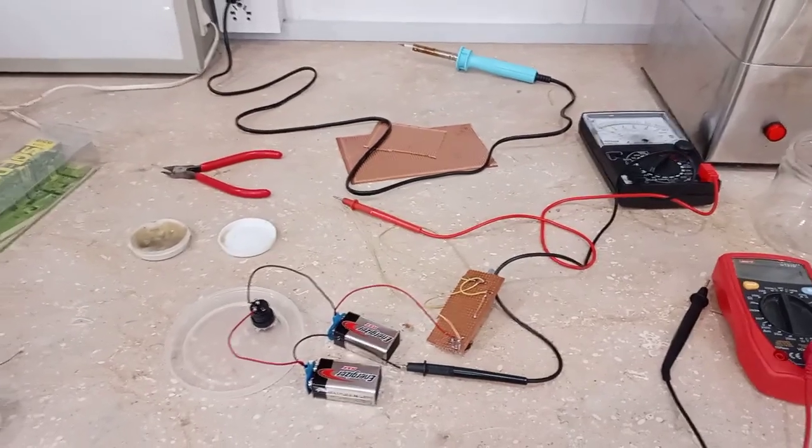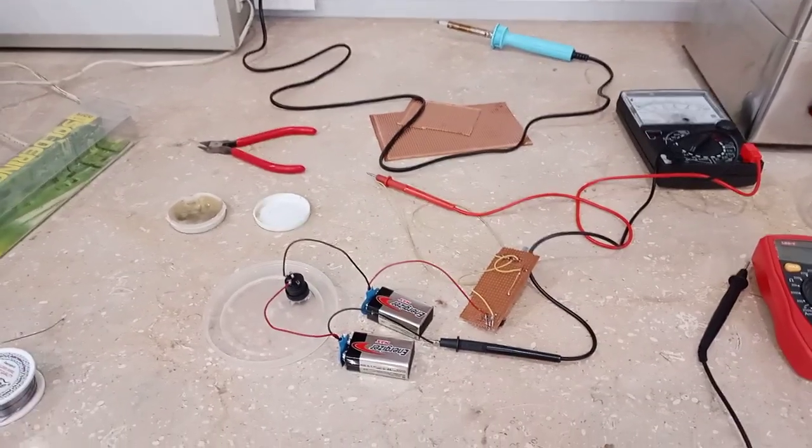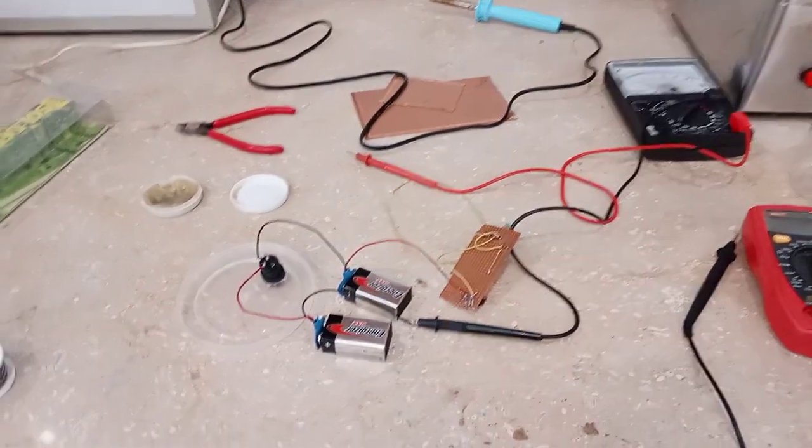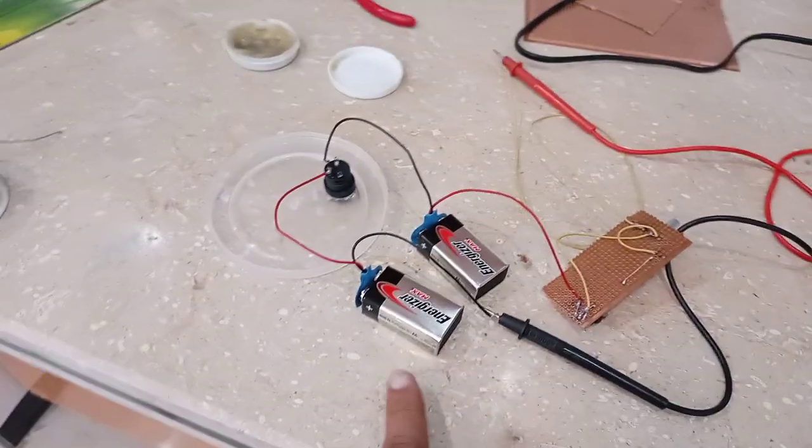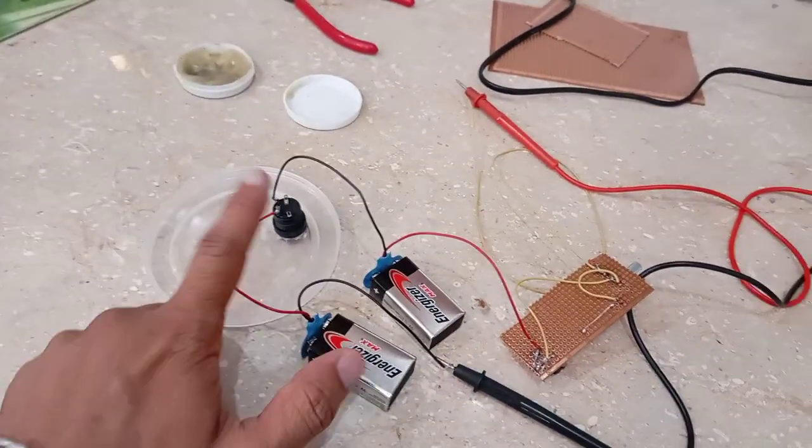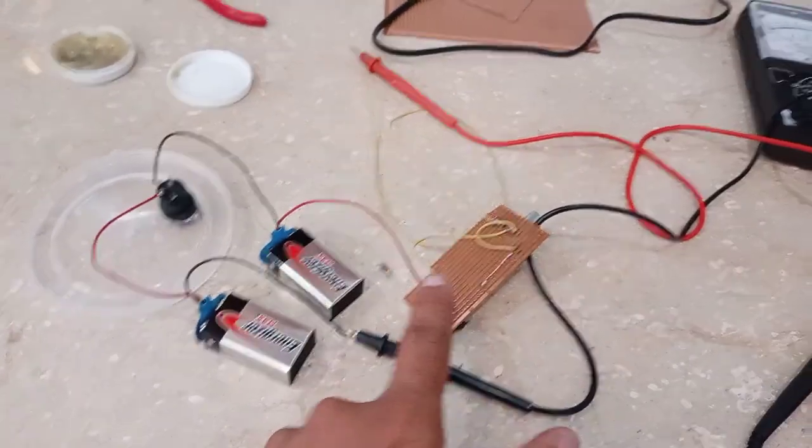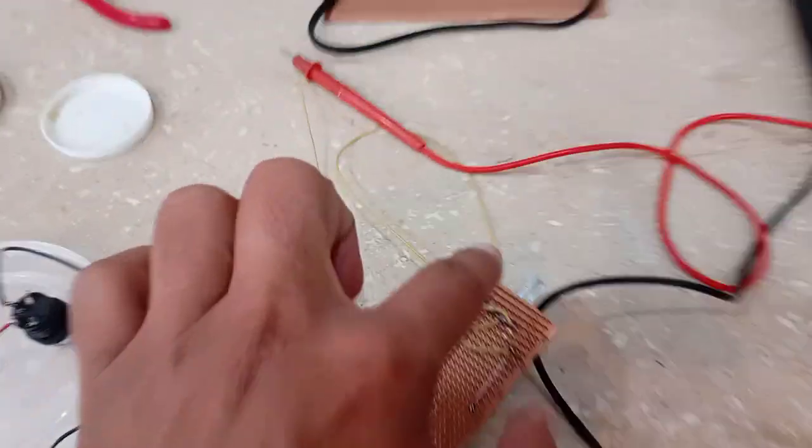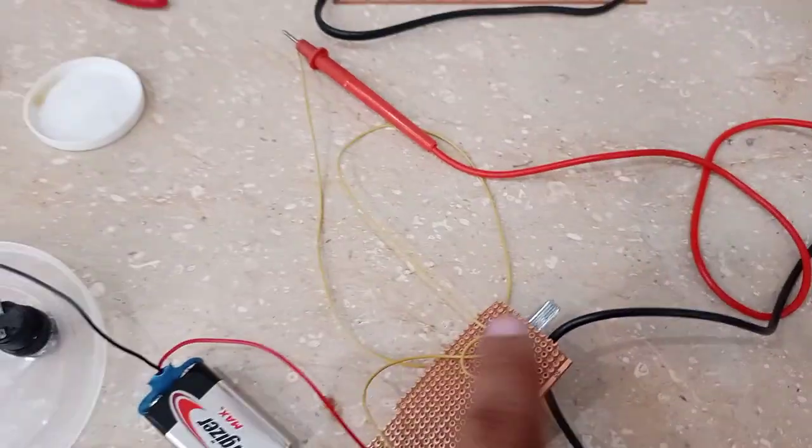I'm going to share the details inshallah in some other video but right now I want to show you the working principle. So I have hooked two 9-volt batteries and this is an on-off switch and this is the circuitry and this is the potentiometer or the variable resistance that I've attached.